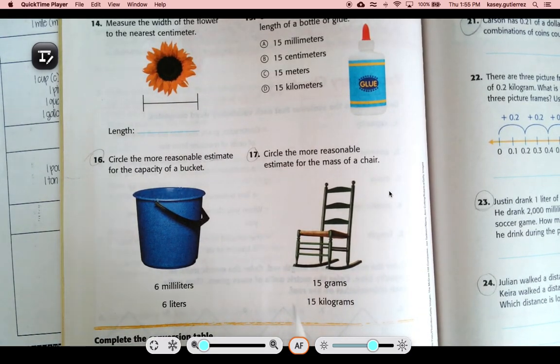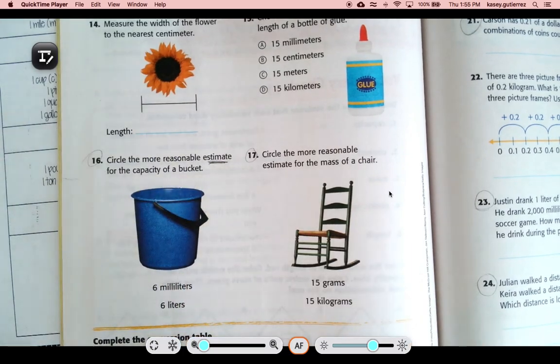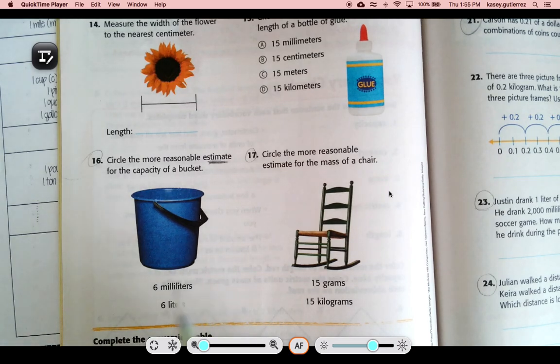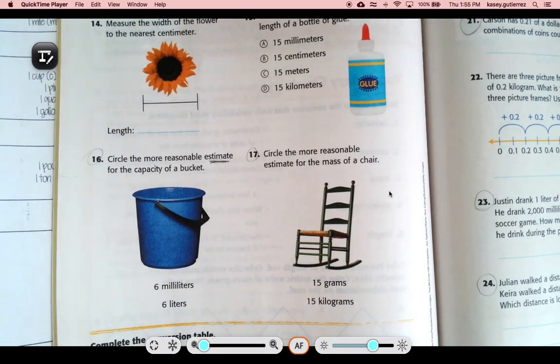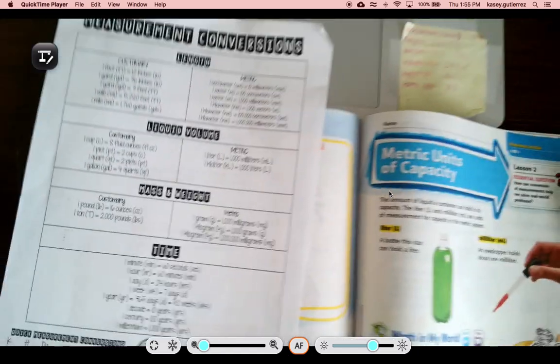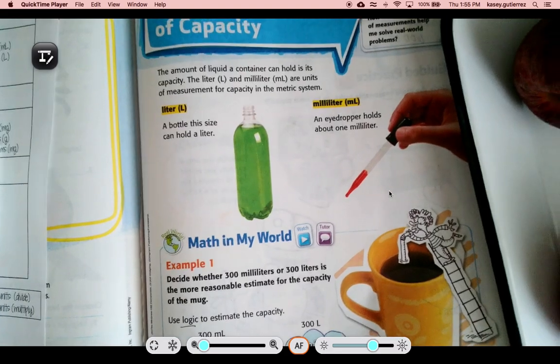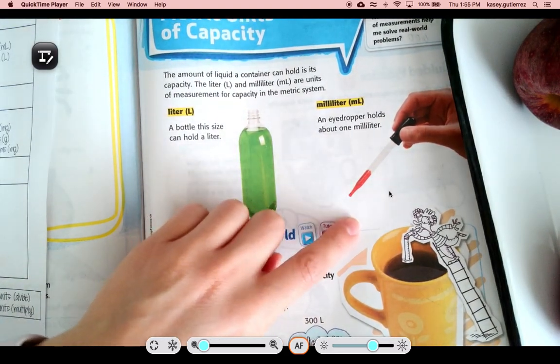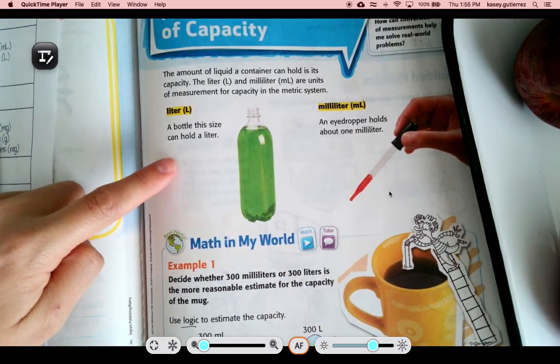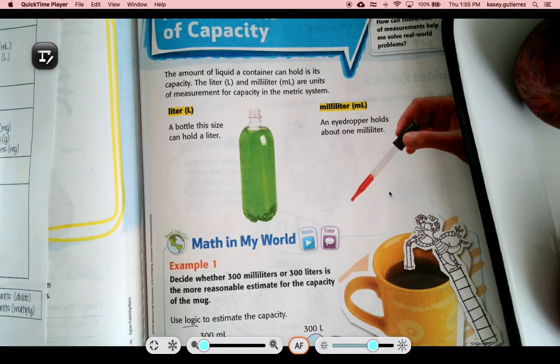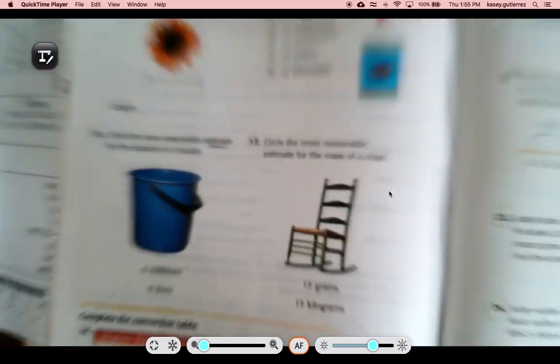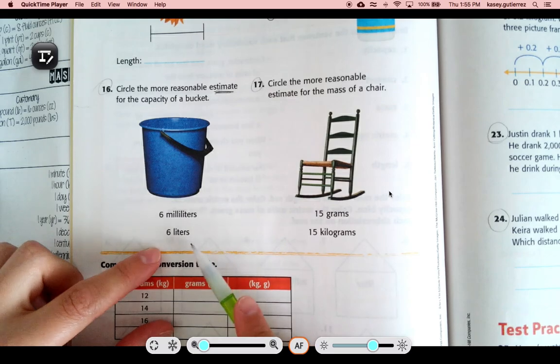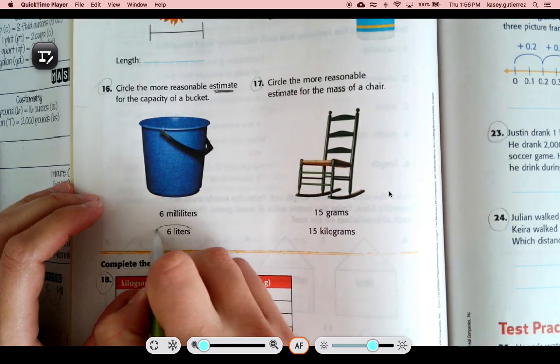Number 16 says, circle the more reasonable estimate for the capacity of a bucket. So I'm assuming this is like a normal size bucket that you take to the beach. We have 6 milliliters or 6 liters. If you remember, back to page 781, 1 milliliter is about an eyedropper, about that much. And then a liter is like this. So what's more reasonable? 6 little droplets or 6 liters? I would say 6 liters.